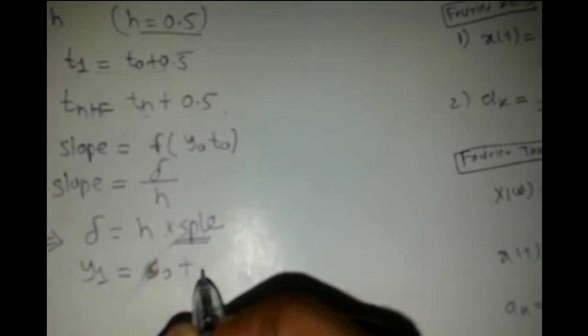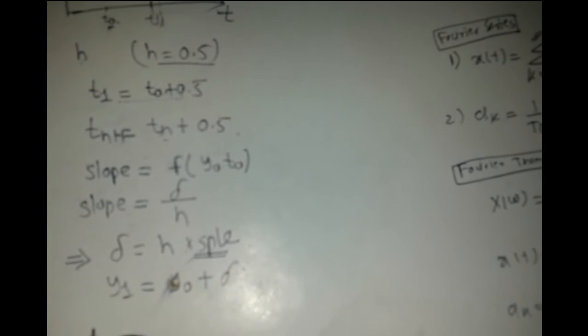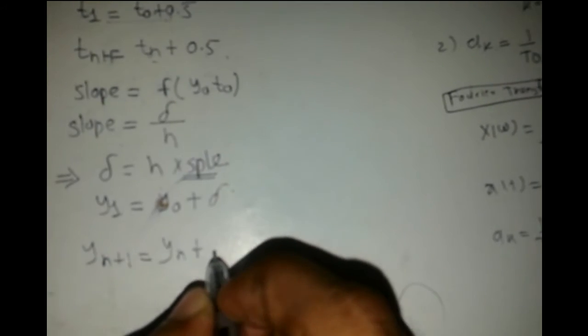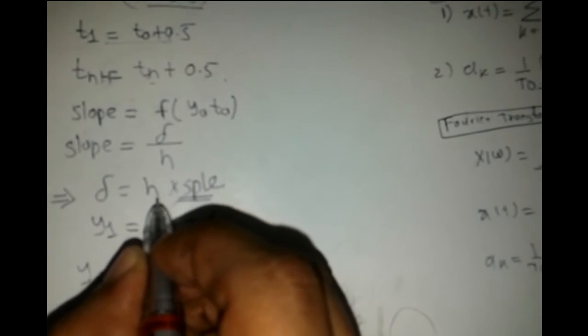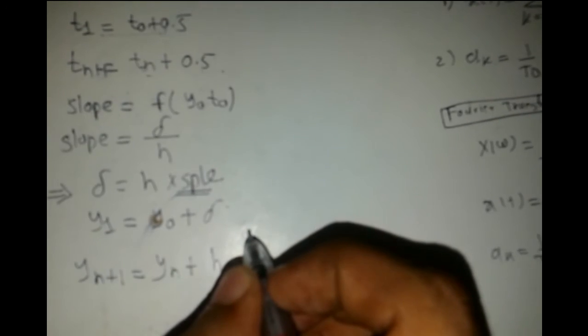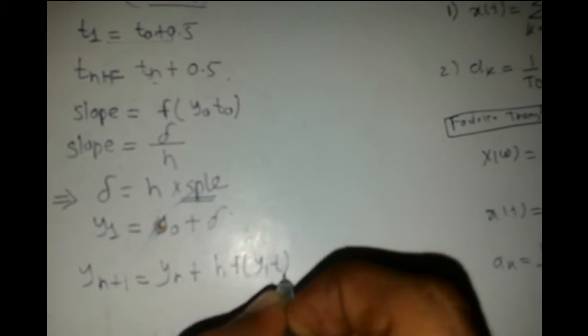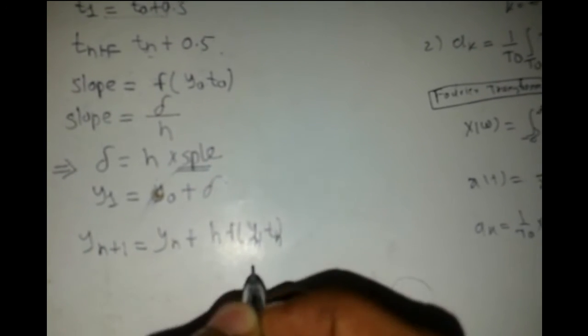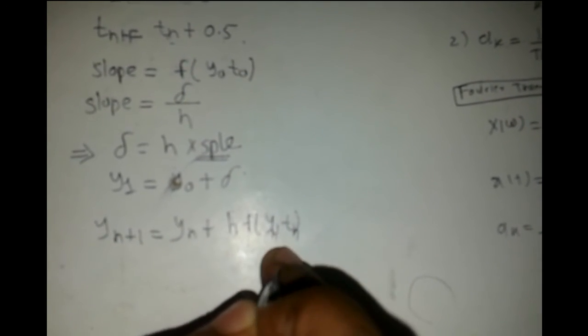In general, yₙ₊₁ equals yₙ plus h times f(yₙ, tₙ). In this way I can calculate any general yₙ₊₁, which is the solution to the differential equation at each step.